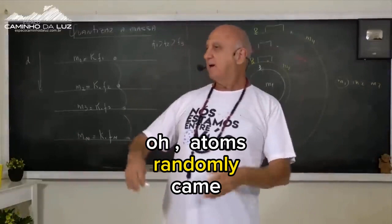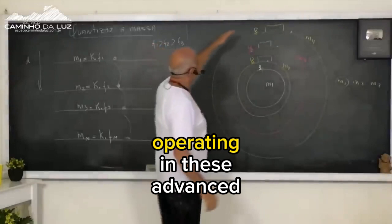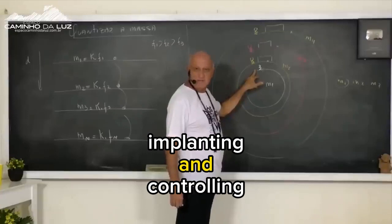Oh, atoms randomly came together, formed molecules, then organic molecules, then microorganisms, and after billions of years, this complex organism. No, it's not like that. The intelligences operating in these advanced spaces began creating biological forms, designing, implanting, and controlling all forms of life on the surface of dense worlds.